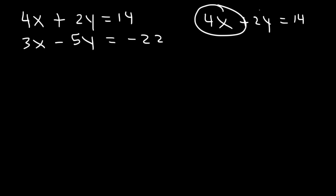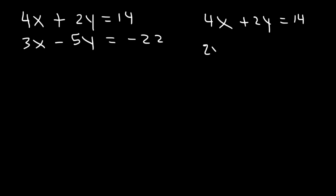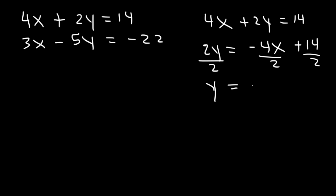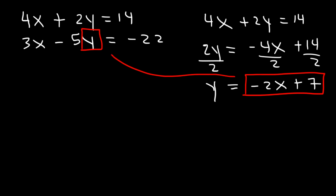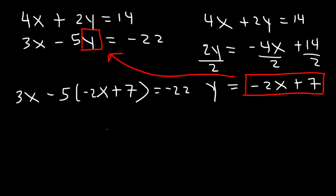Now in the second equation, we replace y with negative 2x plus 7. So: 3x minus 5 times (negative 2x plus 7) equals negative 22. Distributing negative 5: negative 5 times negative 2x is positive 10x, and negative 5 times positive 7 is negative 35. So we have 3x plus 10x minus 35 equals negative 22.